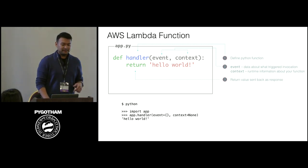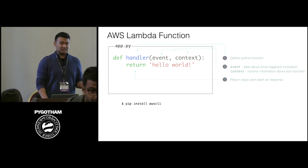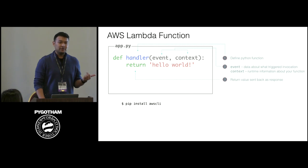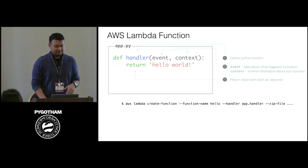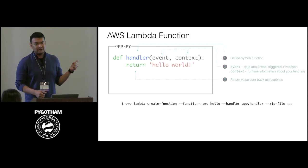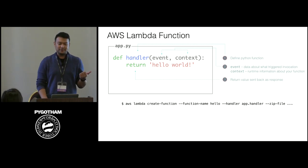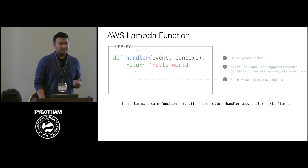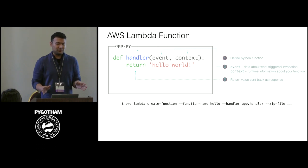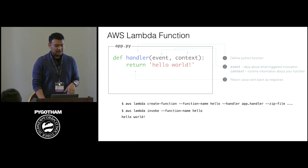If we wanted to do the same thing with Lambda, we can install the CLI — it's a Python package, just pip install awscli. You'll run configure, and once you have that ready, you can run the create-function command. You give it a name, the handler import path — app.handler, just like the REPL — and then the zip file. Once that's working, you can run the invoke command and Lambda will run your function and return the result.